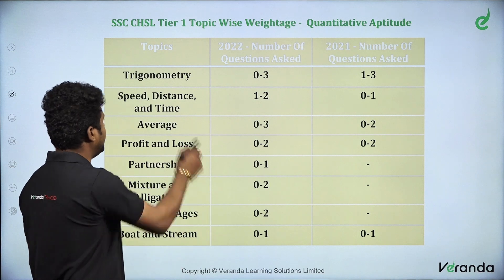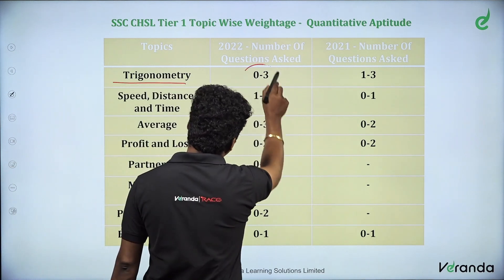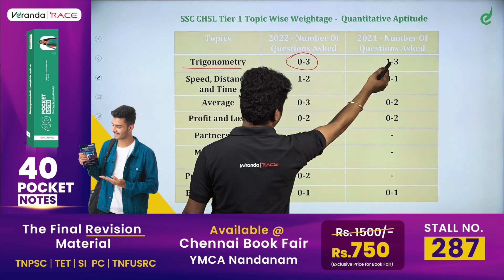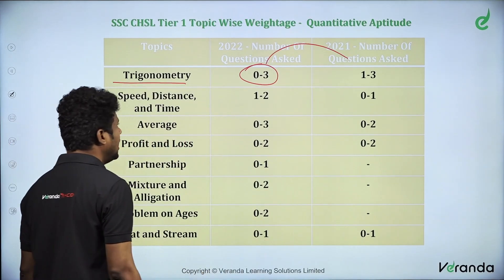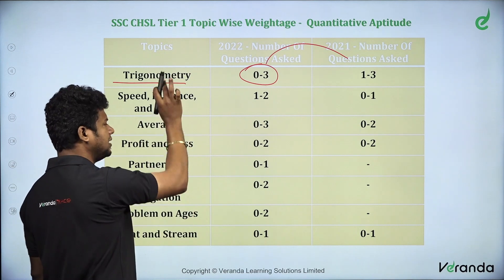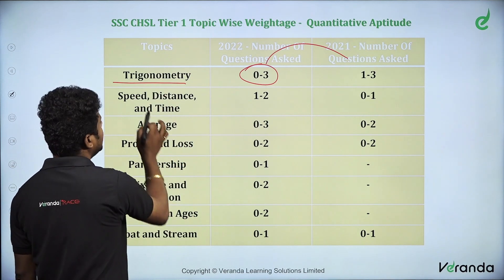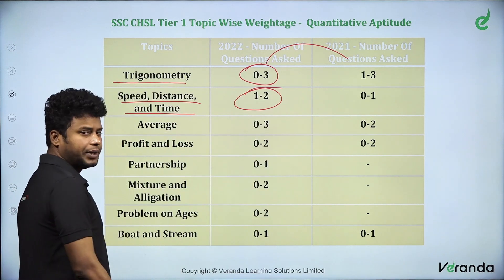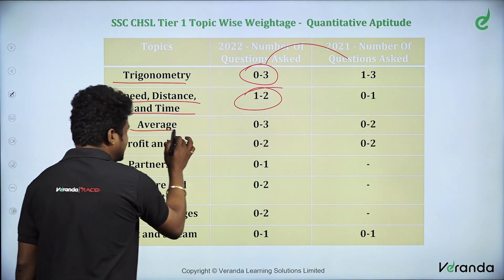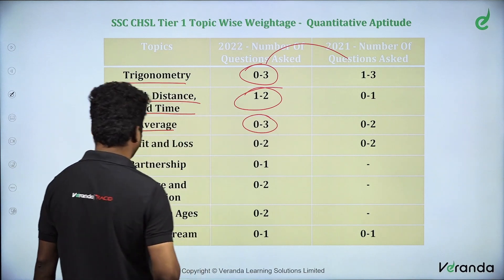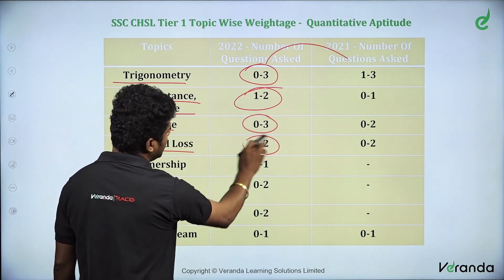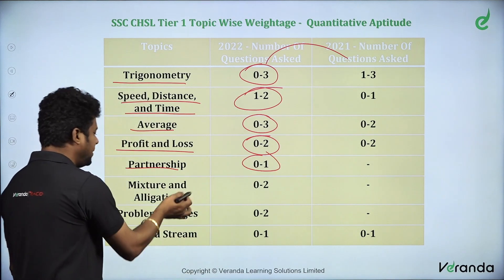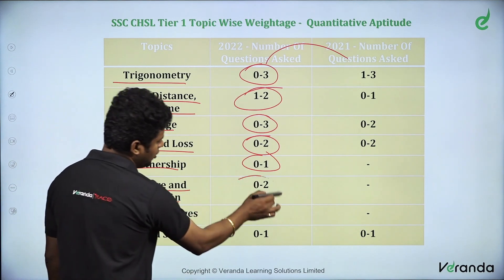That brings us to Trigonometry. In Trigonometry, there are 0 to 3 questions — trigonometry carries good weightage. Time, Speed, and Distance — there are about 2 questions. Average — it is not 0 to 3 questions. Profit and Loss has 0 to 1 questions. Mixed Alligation is 0 to 2 questions.